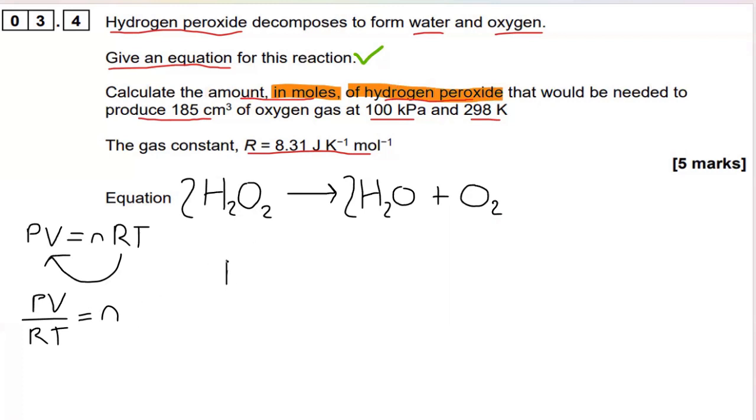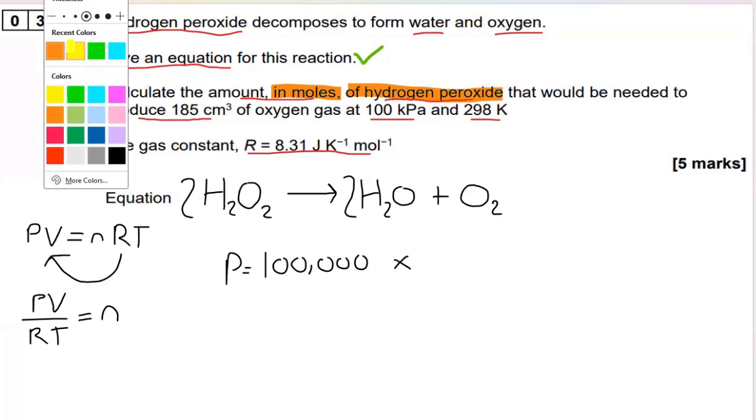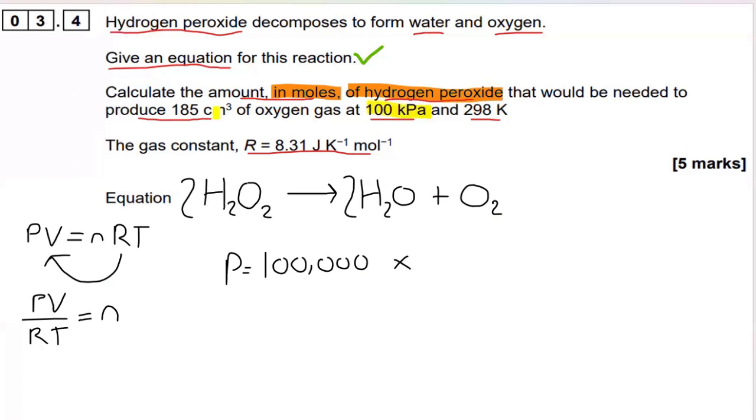So we want to find the number of moles of hydrogen peroxide eventually. Now in order to find the number of moles of oxygen, which is the information we've been given, the 185 oxygen, we need to look at pressure times volume. Now you must do conversions. In these ideal gas equations, you'll have at least two conversions. So 100 kPa is 100,000 pascals. And to convert 185 centimeters cubed into meters cubed, we need to divide by a million, 1 times 10 to the 6.